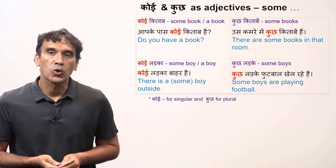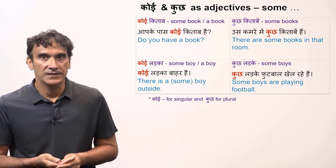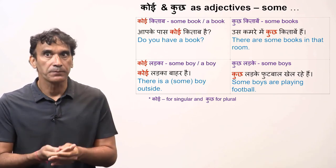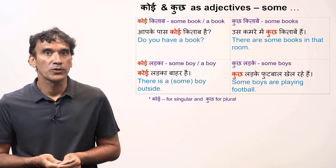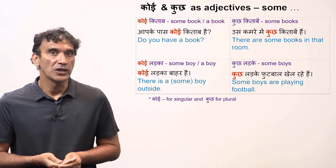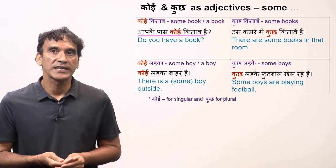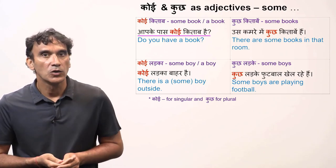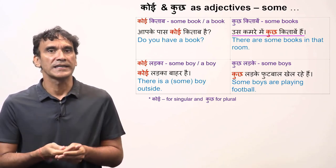The words koi and kuch can also be used as adjectives, giving the meaning of some. Koi is for singular and kuch is for plural. So koi kitab means some book or a book, while kuch kitab means some books. Aap ke paas koi kitab hai? — Do you have a book? Us kamre mein kuch kitab hai — There are some books in that room.